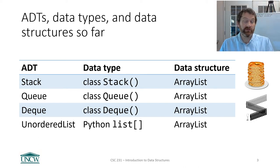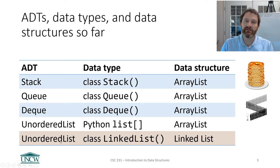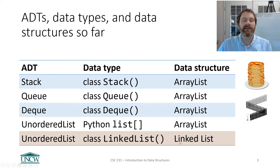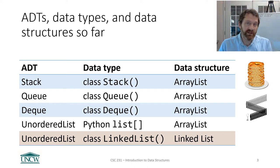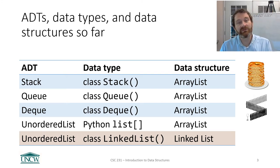Here's a summary of the ADTs and data types we have talked about so far in this class. Now we're going to fit in something brand new and totally different. We're going to once again implement the unordered list abstract data type — search the list, remove from the list, append to the list, insert into the list. But you are going to be creating a new data structure called a linked list.